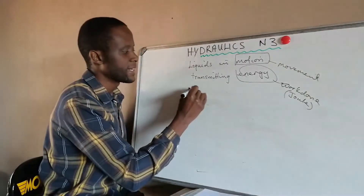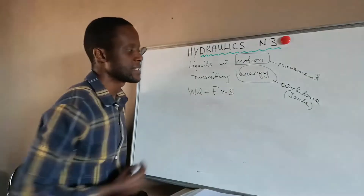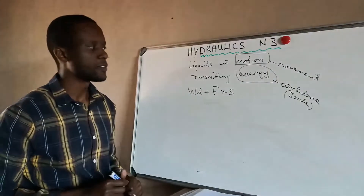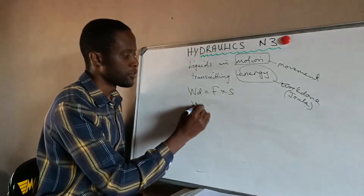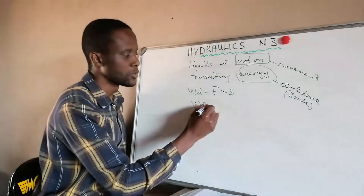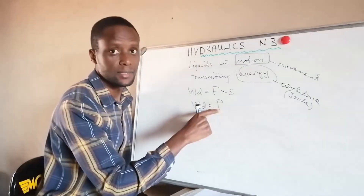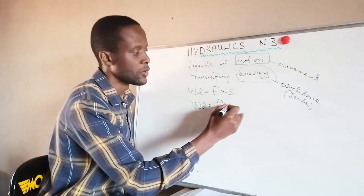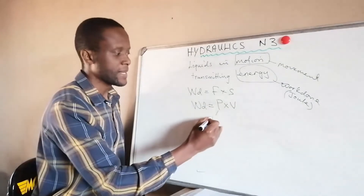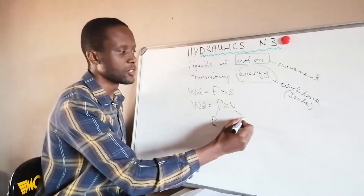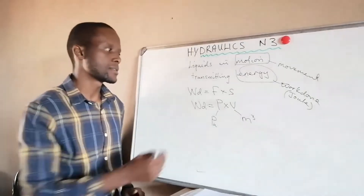So our two formulas for work done are: Work done = Force × Displacement (where force = mass × 9.8), and Work done = Pressure × Volume, where pressure is in pascals (P, not density) and volume is in cubic meters.